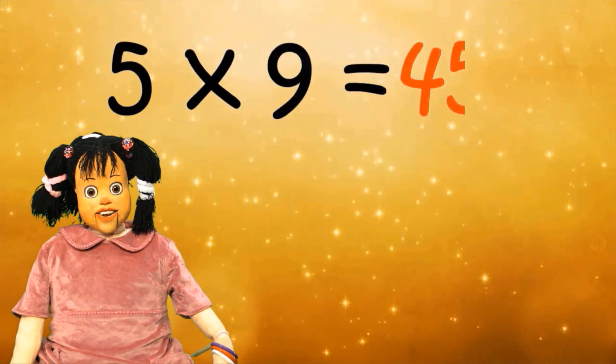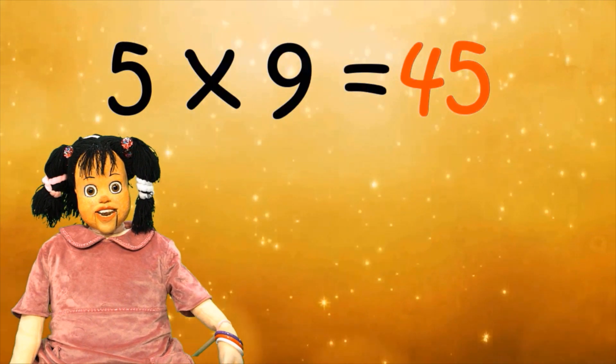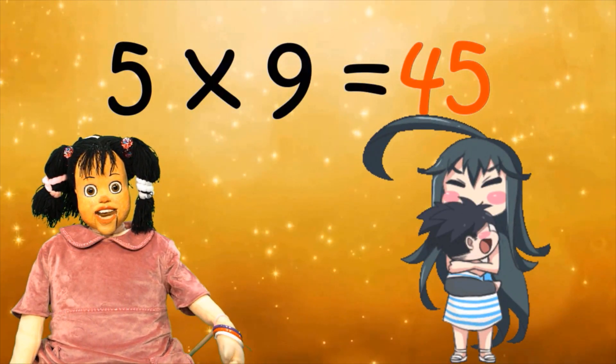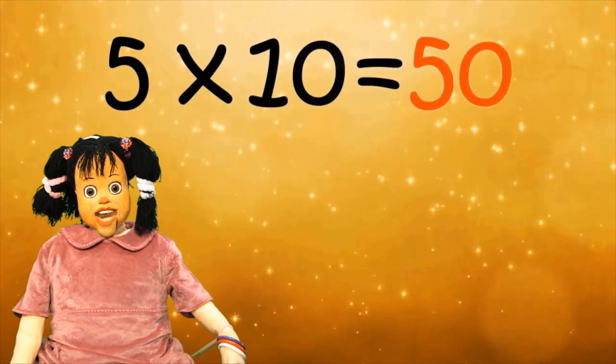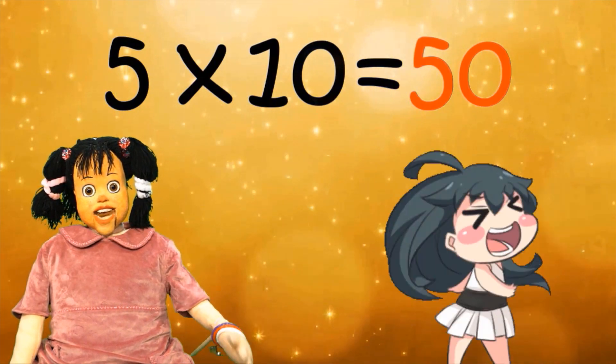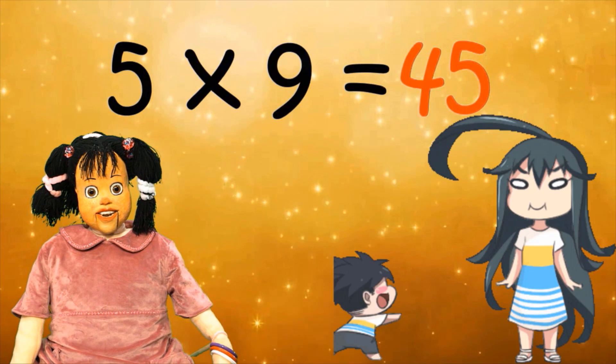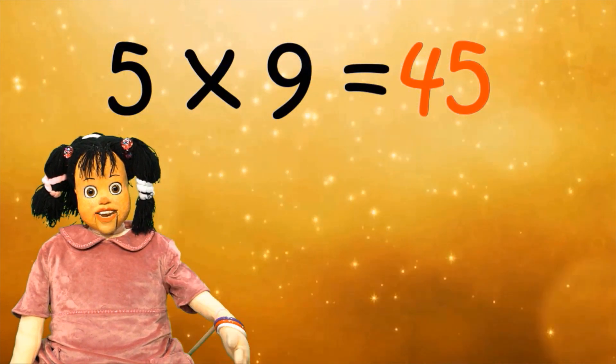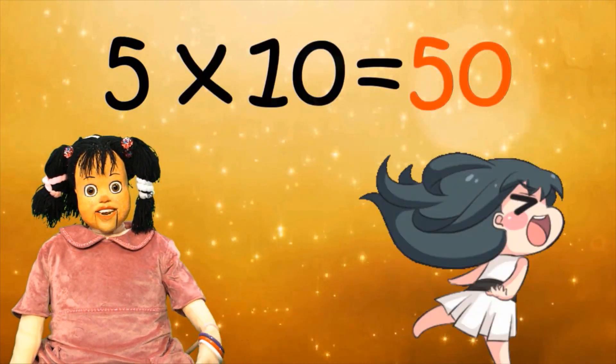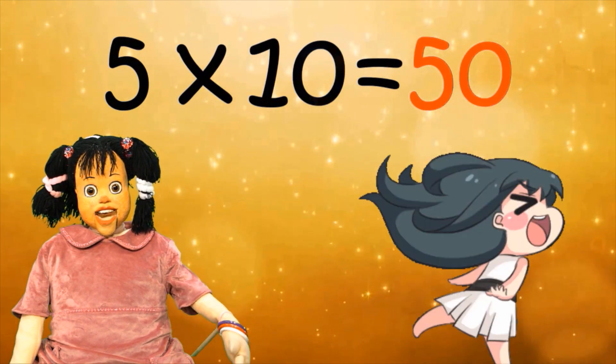5 times 9 equals 45, buradaki herkes kardeş. 5 times 10 equals 50, ödevini bitiren belli. 5 times 9 equals 45, buradaki herkes kardeş. 5 times 10 equals 50, ödevini bitiren belli.